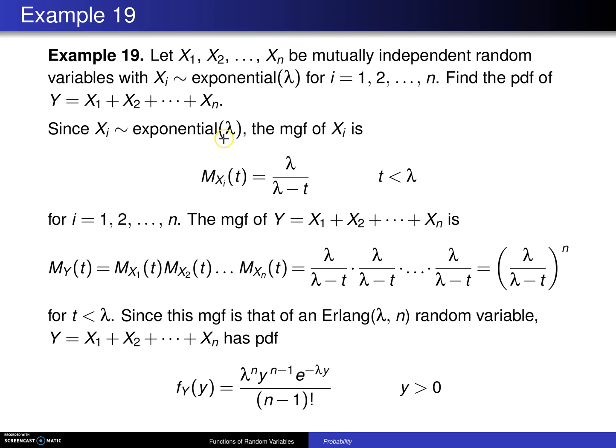Since xi is exponential λ, the moment generating function of x sub i is, and this right here is just taken from chapter 5, when the exponential distribution was introduced. M sub xi of t is λ over λ minus t for t values less than λ.